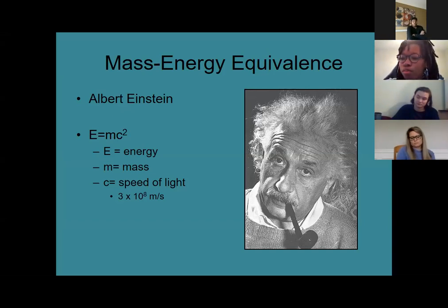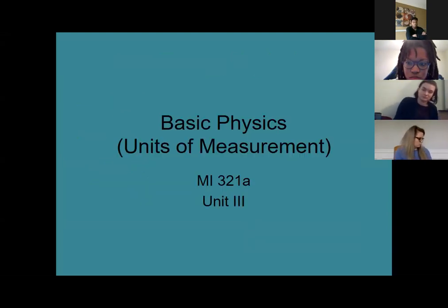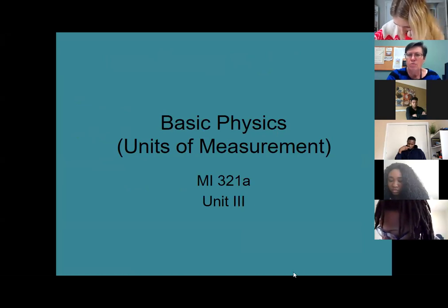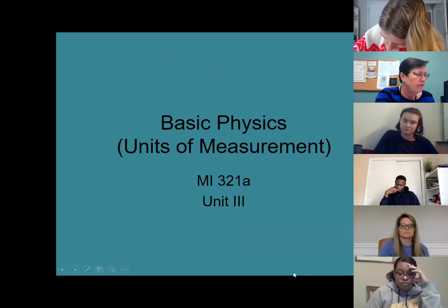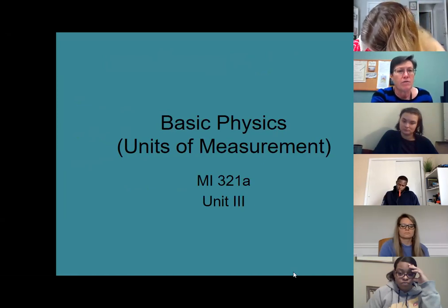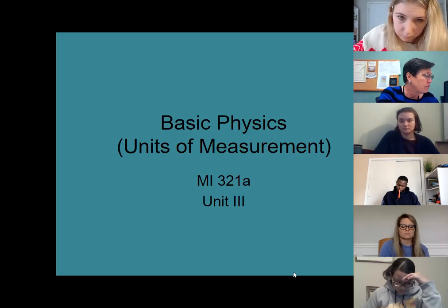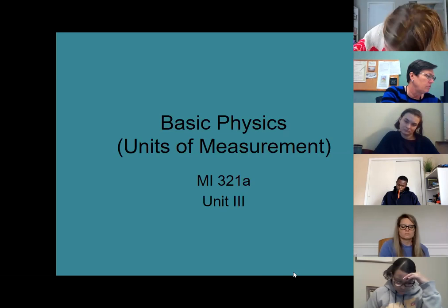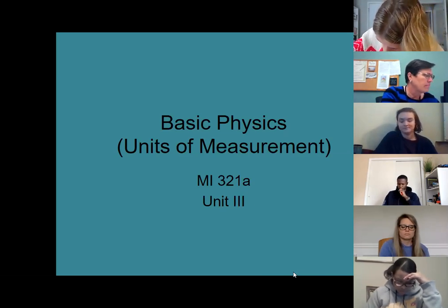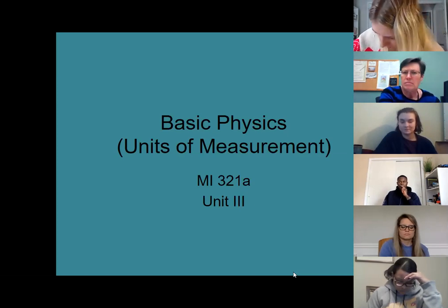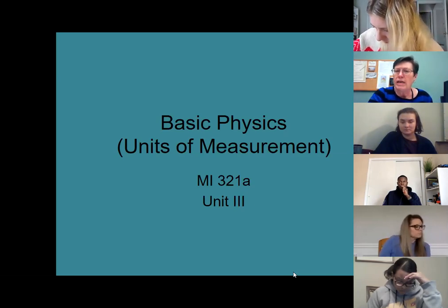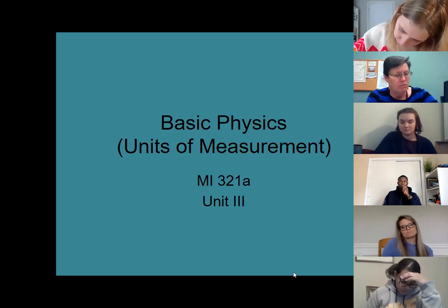This semester we'll focus more on classical physics or Newtonian physics when we get to that section. We've reviewed some basic concepts so far. Before we go on, does anyone have questions about what we've covered? This information is in chapter two, roughly pages 20 to 27.